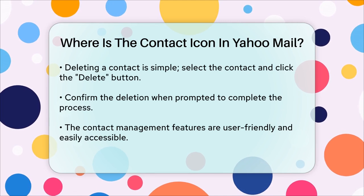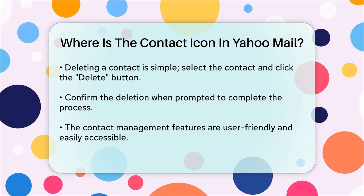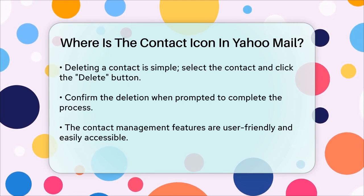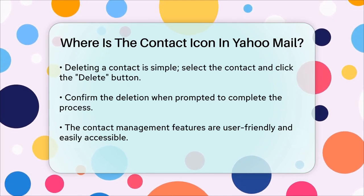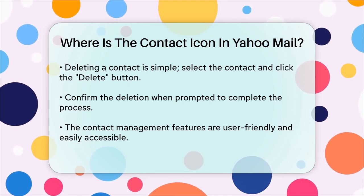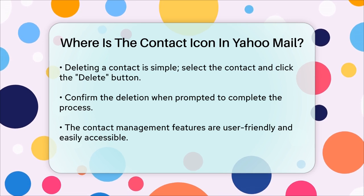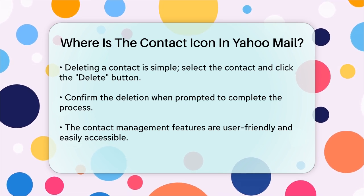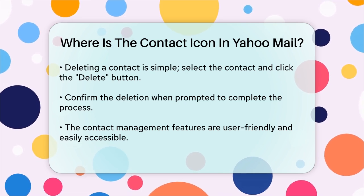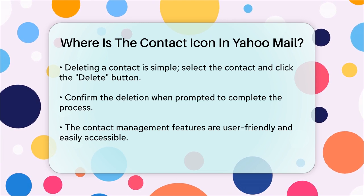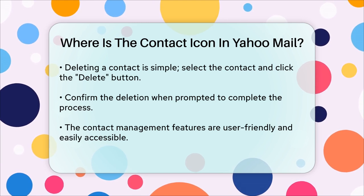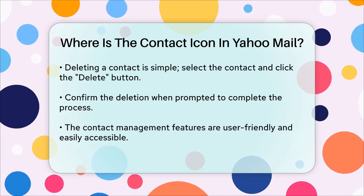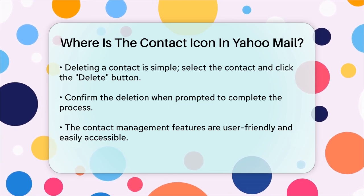So to sum it up, the contact icon in Yahoo Mail on Android is in the top right corner of the screen. And from there, you can manage all your contacts with ease. Whether you're adding, importing, or deleting contacts, it's all just a few taps away.